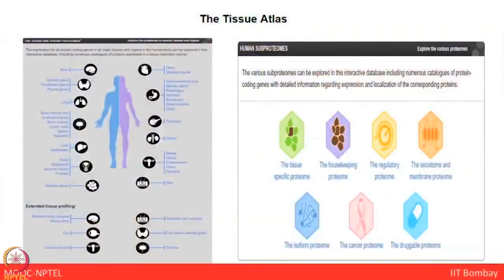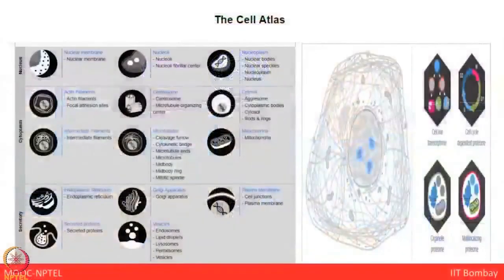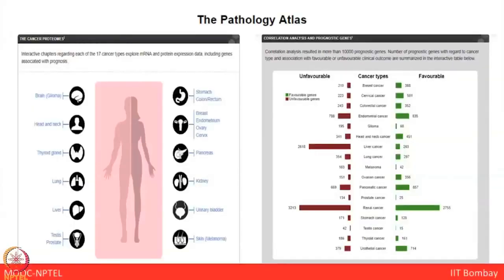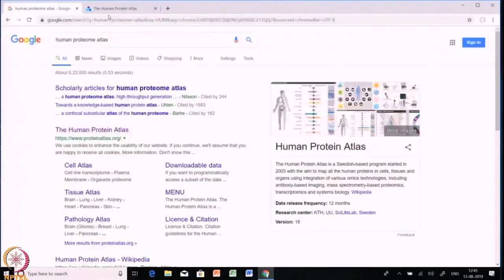The Human Proteome Atlas has been broadly classified into three major atlases. The first is the Tissue Atlas, which contains information regarding the expression profile of human genes at both mRNA and protein level — protein expression data from 44 normal human tissue types is derived from antibody-based protein profiling using immunohistochemistry. Next is the Cell Atlas, which provides high-resolution insights into the spatiotemporal distribution of proteins within human cells, derived from antibody-based profiling by immunofluorescence confocal microscopy using a panel of 64 cell lines.